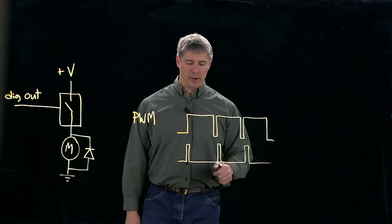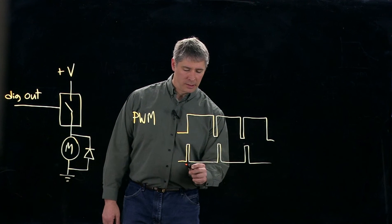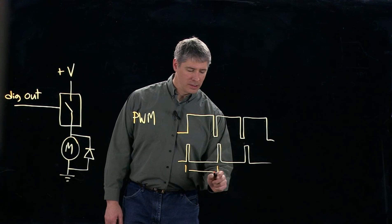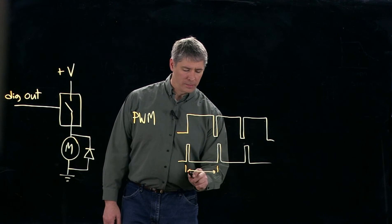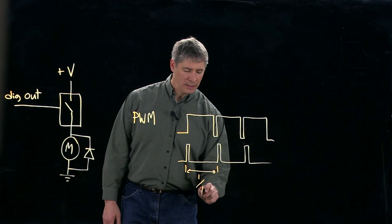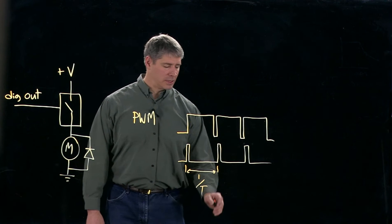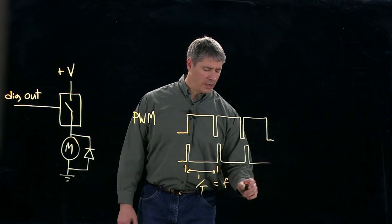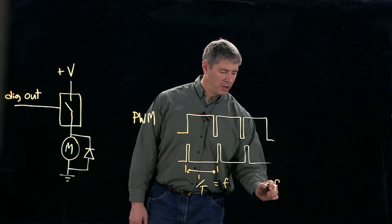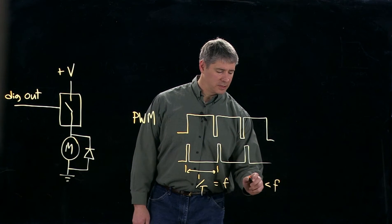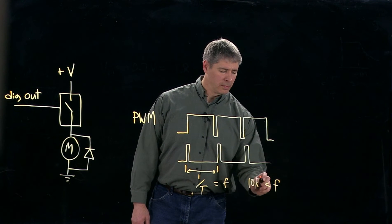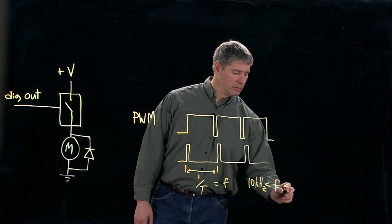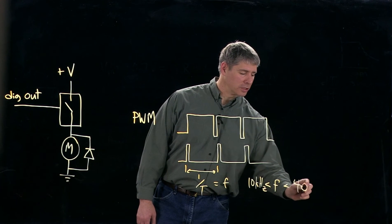The PWM frequency is defined as one over T. The frequency is typically in the range of 10 kilohertz to 40 kilohertz or so, though you can have higher and lower pulse width modulation frequencies.